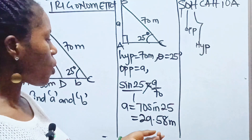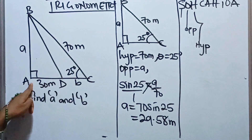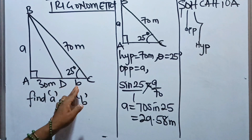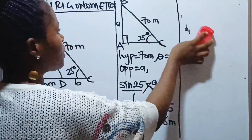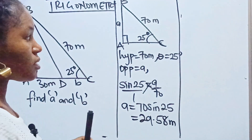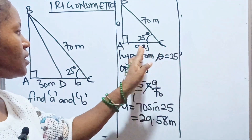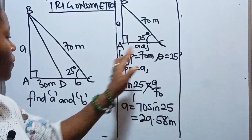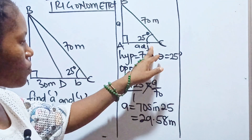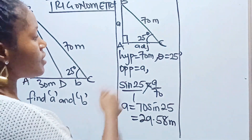We use the same idea to find b. B can be found once we get AC, because b = AC − AD. The whole of AC minus AD gives us b. We can get AC from this triangle — AC is the adjacent side, since the opposite is the given side and the hypotenuse is 70 meters. Once we have AC, we subtract 30 meters to get b.